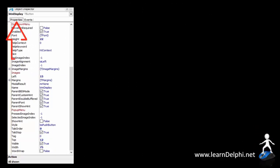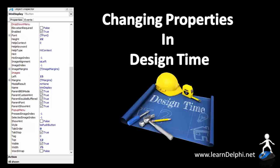On the left side of your Delphi IDE you find the Object Inspector. In the Object Inspector is a Properties tab and an Events tab. The Properties tab allows a programmer to set properties for an object while designing his or her program. We refer to this process as changing properties in design time.